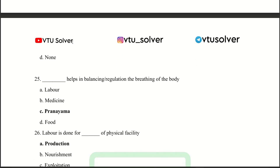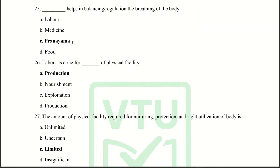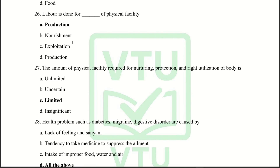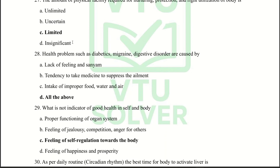Next question: Dash helps in balancing or regulating the breathing of the body. Answer: Pranayam. Next question: Labor is done for physical facility production. Next question: The amount of physical facility required for nourishing, protecting, and right utilization of the body is limited.